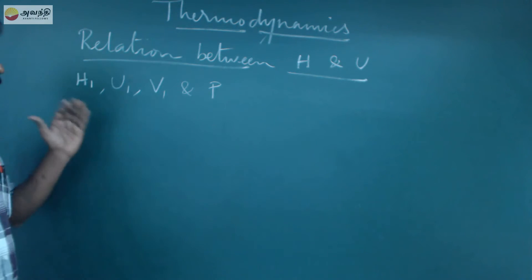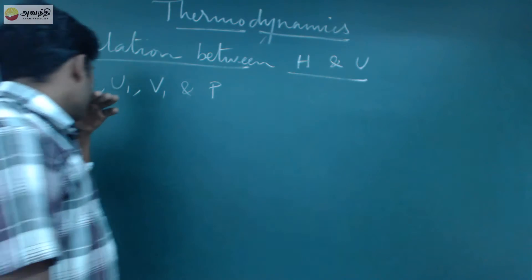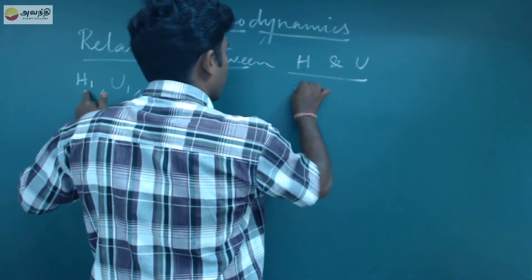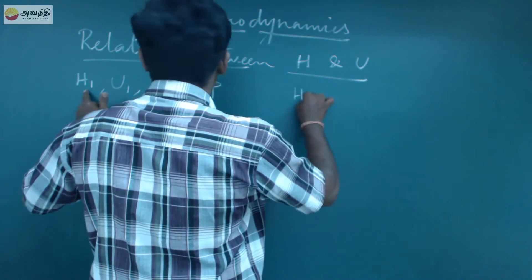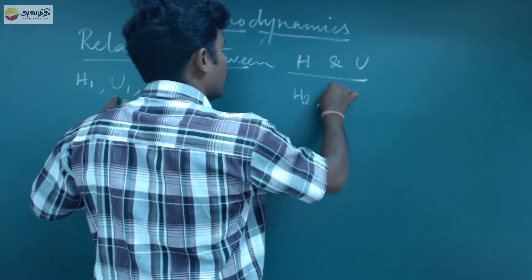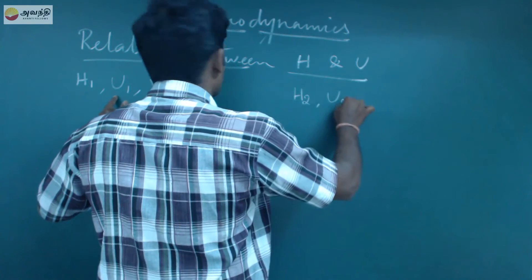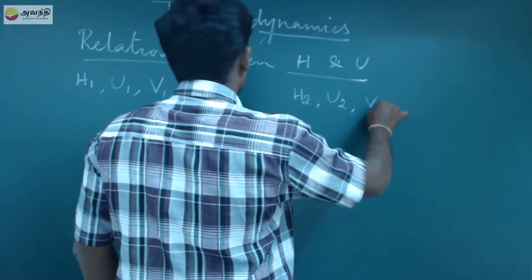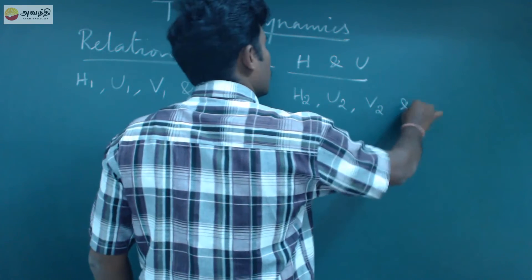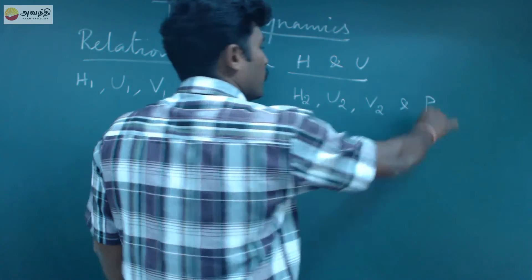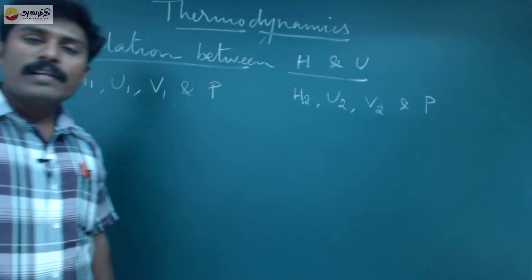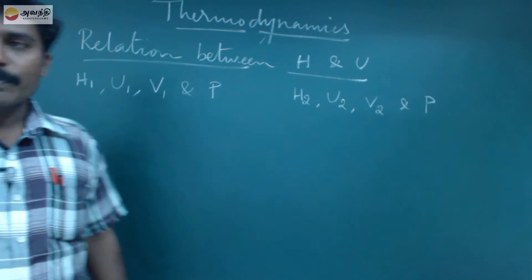At the final state, enthalpy is H2, internal energy is U2, volume is V2. That is constant pressure, meaning P1 equals P2 because pressure is constant throughout.